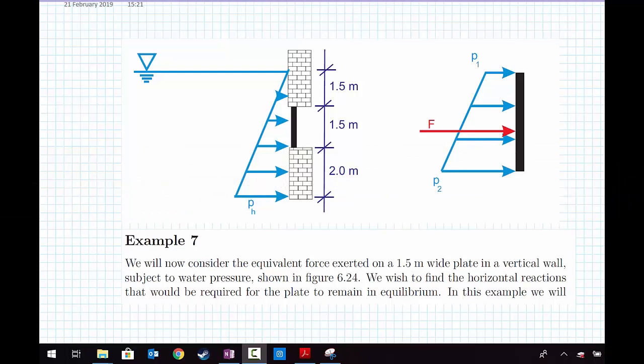In this example, we're asked to find the equivalent force acting on a section of a gate in the middle of a wall that is submerged in water, where rho equals 1000 kilograms per meter cubed. Once we know the force, we're also asked to find the horizontal reactions required for the plate to remain in equilibrium.